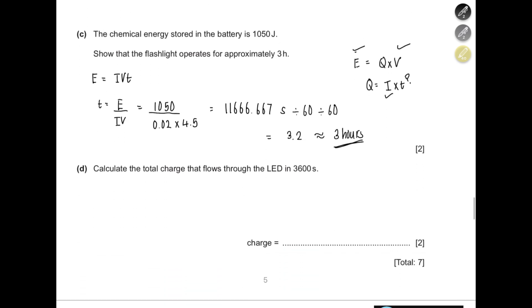Calculate the total charge that flows through the LED in 3600 seconds. Q = I × t = 0.02 × 3600 = 72 coulombs.